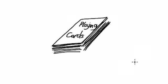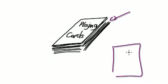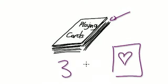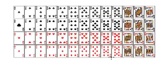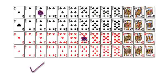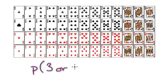Let me ask you a question. Let's say we've got a packet of playing cards. If I were to randomly pick one card, what is the probability that this card would be a heart or a three? So I want to know what is the probability of getting a number three or a heart.